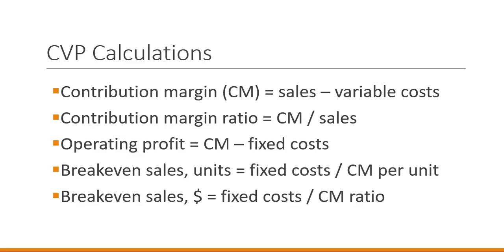Operating profit is contribution margin minus fixed costs. Breakeven sales comes in two forms: in units, it's fixed costs divided by contribution margin per unit; in dollars, it's fixed costs divided by the contribution margin ratio. When we see the sample calculations, I'll show you an easier way to calculate breakeven sales in dollars, so you'll have two options.